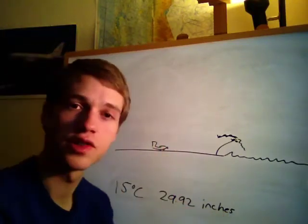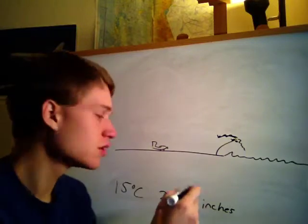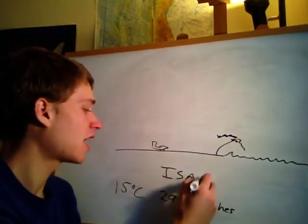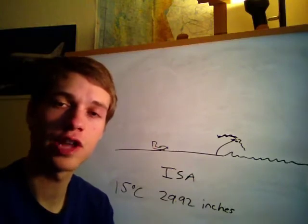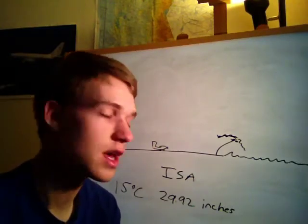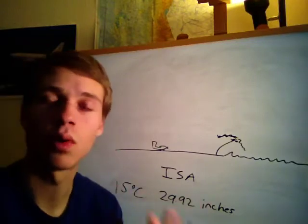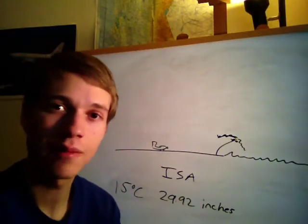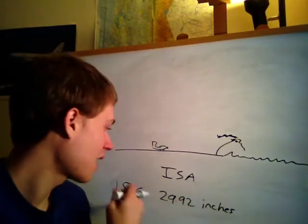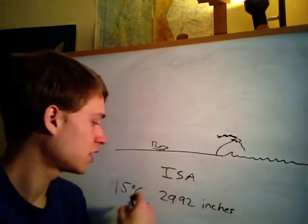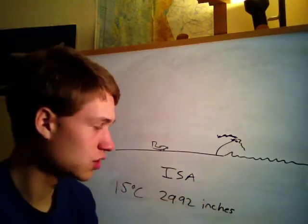These are standard conditions. You're going to see the abbreviation ISA a lot — it stands for International Standard Atmosphere, adopted by the International Civil Aviation Organization as the world standard. Every time you see ISA, just think 15 degrees Celsius and 29.92 inches of mercury.